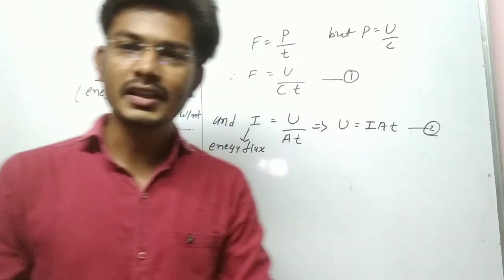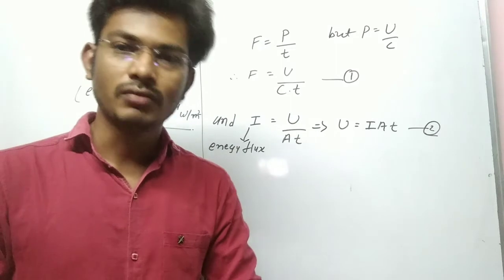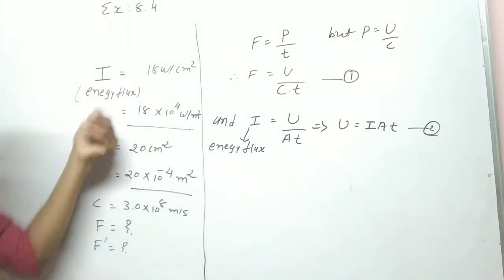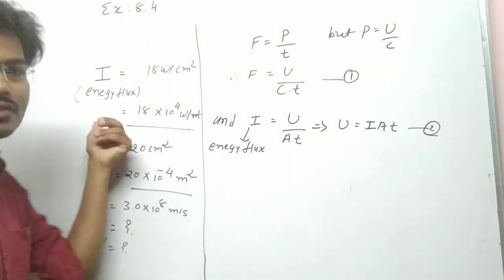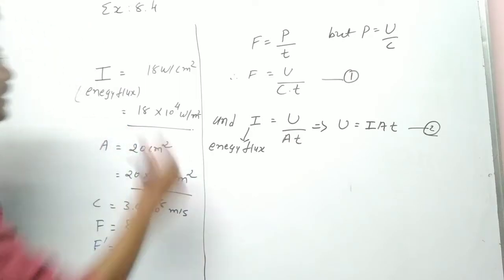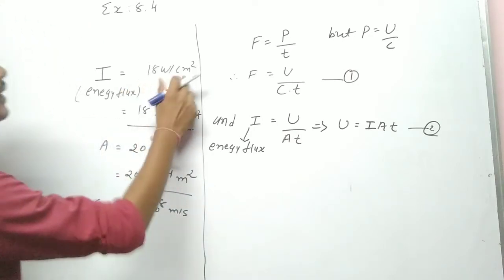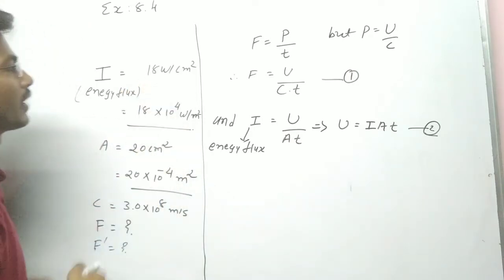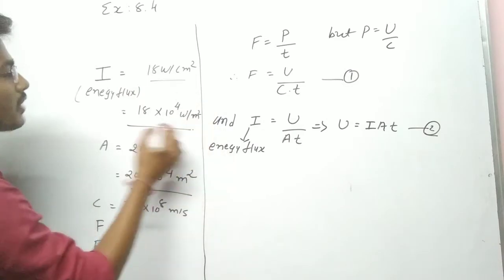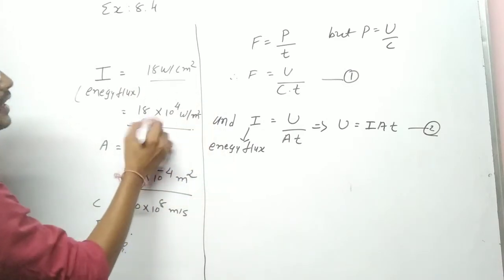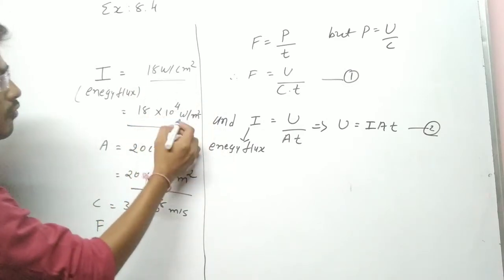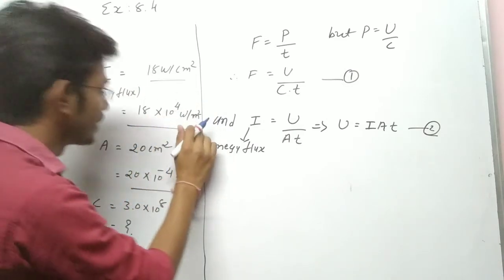So, in this example, what are the given data? The intensity — that means energy flux — is 18 Watt per centimeter square. We need to convert this to SI units, so that becomes 18 × 10⁴ Watt per meter square.